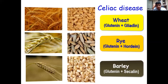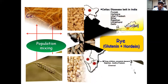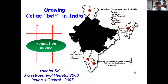Celiac disease is now prevalent in northern and southern India. Wheat, rye, and barley are the triggers. This is the classic celiac belt that Dr. Yachha described, initially in northern India, and now progressively spreading southward, with a prevalence rate of 1% reported in Assam, Tamil Nadu, and various other areas. Dynamic population mixing for jobs and marriages is causing the celiac belt to grow.